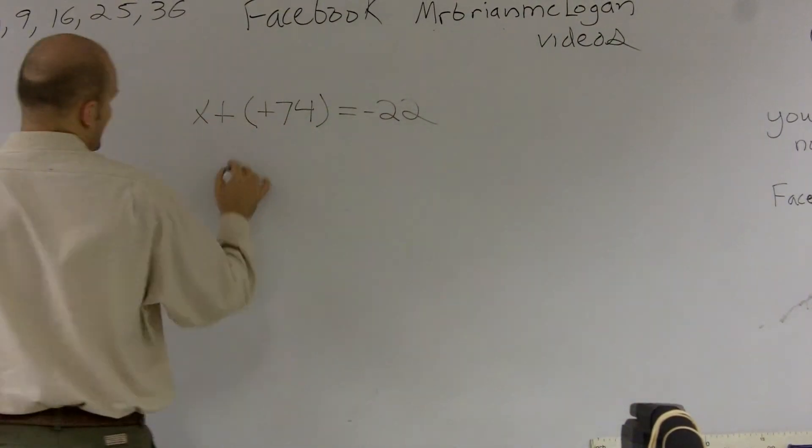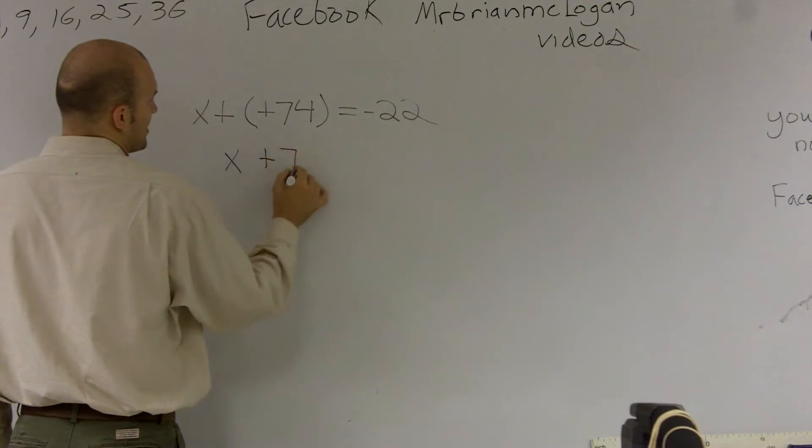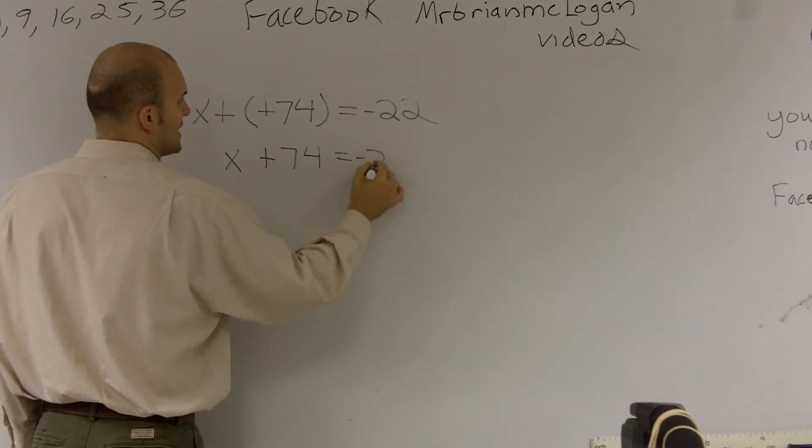So I'm going to rewrite my equation now and do x plus 74 equals negative 22.